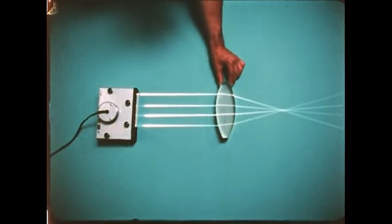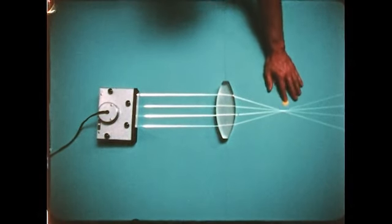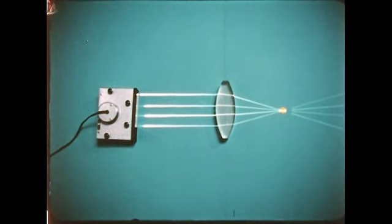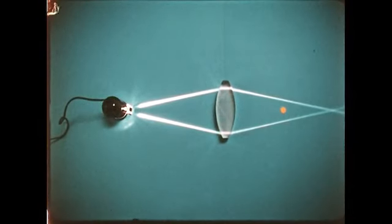We have used parallel rays to determine the focal length of a lens. A point source produces non-parallel rays. They focus further to the right, beyond the focal length.